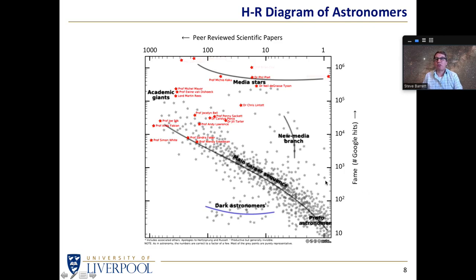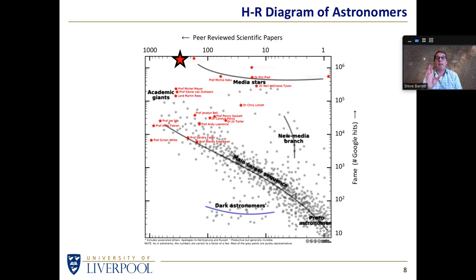Any individual can be placed on this diagram according to how famous they are vertically, and how scientifically productive they are - how many scientific papers they have produced. I invite you to think about who that individual is, basically as high as this diagram goes in terms of fame and pretty much as far left as you can get. That is Carl Sagan. Right next door to him, marginally more famous but with fewer scientific papers, is Stephen Hawking. Coming further over to the right, almost as famous but clearly lower in scientific output, that's where Brian Cox sits.